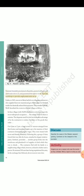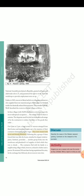The National Assembly proclaimed a republic, granted suffrage to all adult males above 21, and guaranteed the right to work. National workshops to provide employment were set up. Earlier, in 1845, weavers in Silesia had led a revolt against contractors who supplied them raw material and gave them orders for finished textiles but drastically reduced their payments. The journalist Wilhelm Wolf described the events in a Silesian village as follows: 'In these villages, with 18,000 inhabitants, cotton weaving is the most widespread occupation. The misery of the workers is extreme. The desperate need for jobs has been taken advantage of by the contractors to reduce the prices of the goods they order. On the 4th of June at 2 PM a large crowd of weavers emerged from their homes and marched in pairs up to the mansion of their contractor demanding higher wages. They were treated with scorn and threats alternately. Following this, a group of them forced their way into the house, smashed its elegant windowpanes, furniture, porcelain; another group broke into the storehouse and plundered it of supplies of cloth which they tore to shreds. The contractor fled with his family to a neighboring village which, however, refused to shelter such a person. He returned 24 hours later having requisitioned the army. In the exchange that followed, 11 weavers were shot.' Describe the cause of the Silesian weavers' uprising. Comment on the viewpoint of the journalist.